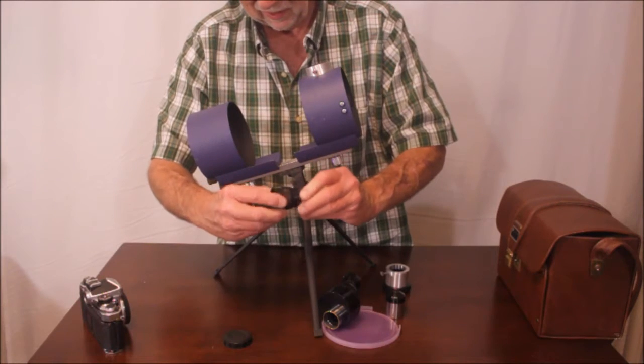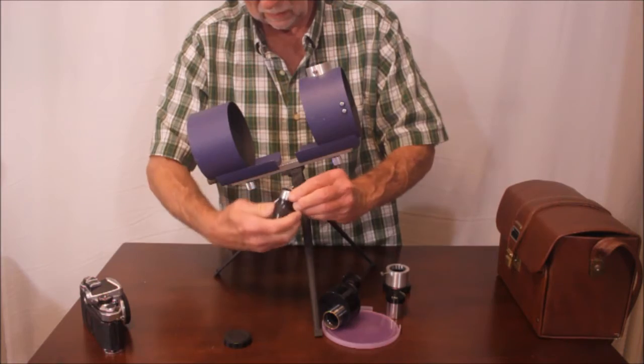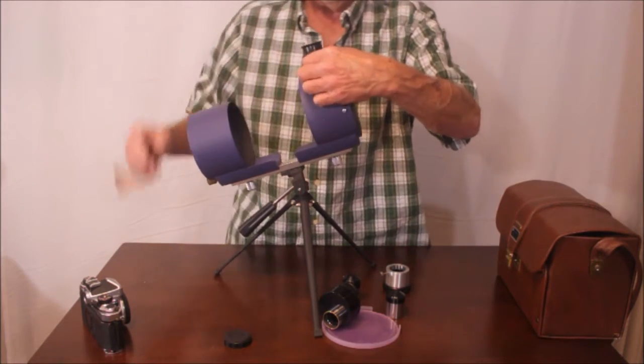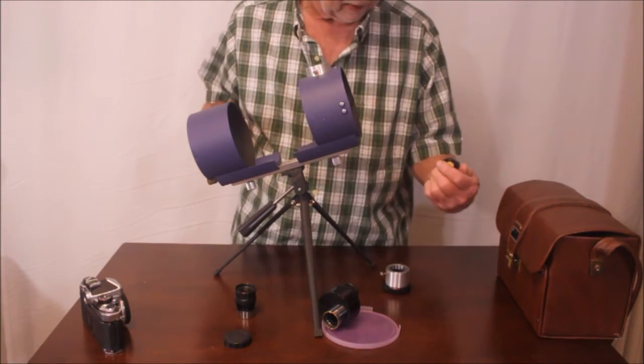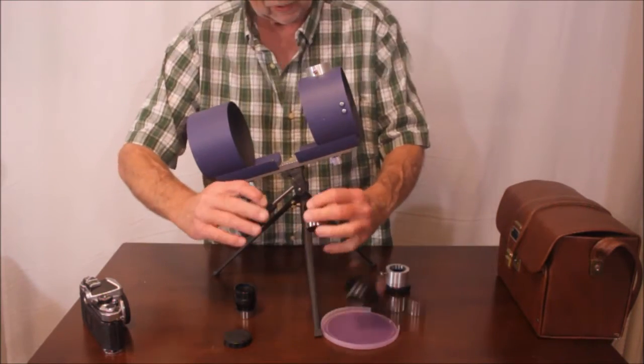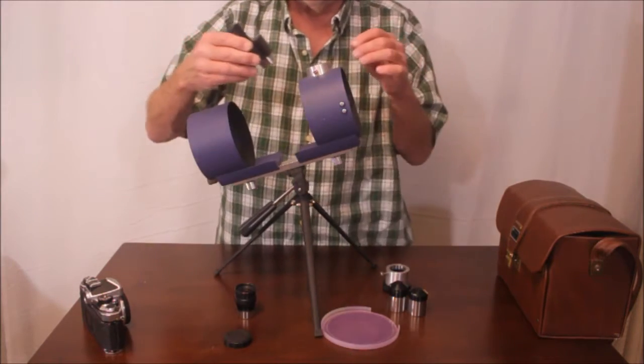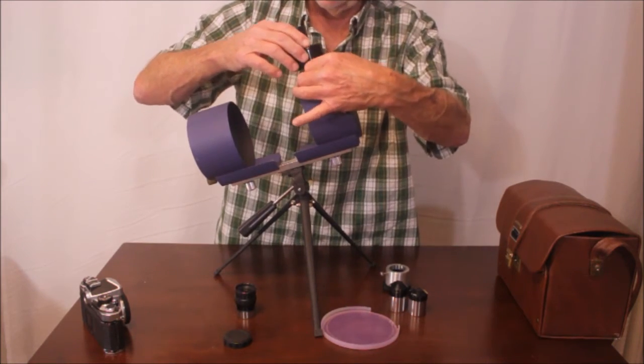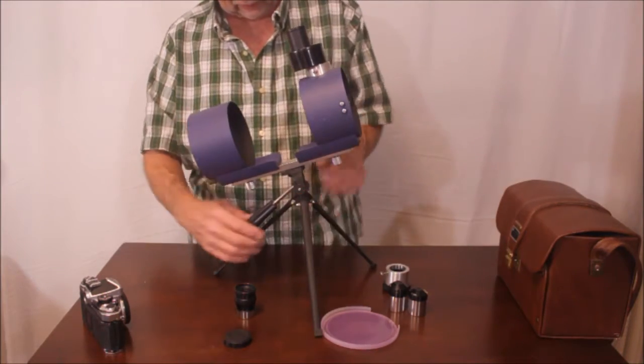It's a zoom eyepiece, probably from a binocular. And it slides right in there. It does come also with a 12mm and a 6mm Kellner. Also, this thing, you'll notice, this image erecting system has a shortened tube here. And that's so that the tube doesn't interfere with the light path going through the telescope.